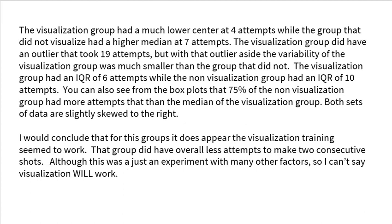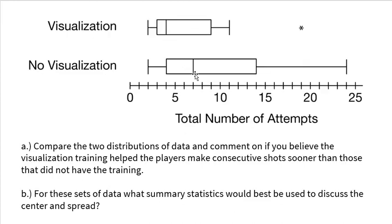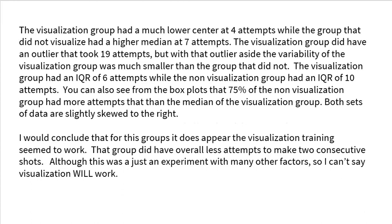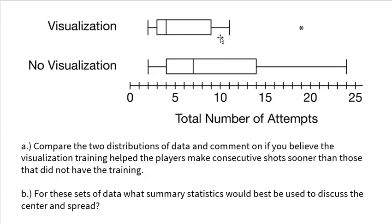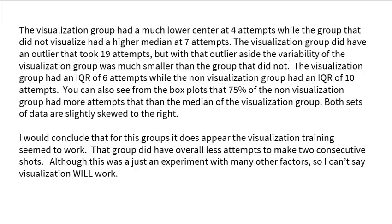The visualization group had a much lower center at a median of four attempts, while the group that did not visualize had a higher median at seven attempts. The visualization group did have an outlier that took 19 attempts, but setting that aside, the variability of the visualization group was much smaller. Their scores had a smaller range and a smaller IQR. The visualization group had an IQR of six attempts, while the non-visualization group had an IQR of 10 attempts. IQR is calculated as Q3 minus Q1.